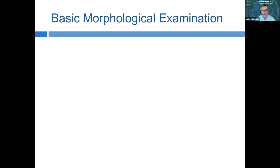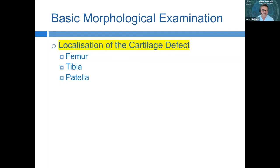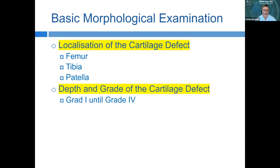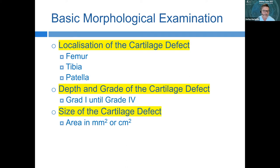The basic morphological examination should be done in every case where we look for a cartilage defect. We look at the localization — in the knee, whether the defect is on the femur, tibia, or patella. We assess depth and grade, from superficial defects up to grade four full-thickness defects where bone is reached. We also assess size, since size determines our repair approach, plus any concomitant pathologies such as meniscus or ligament injuries.